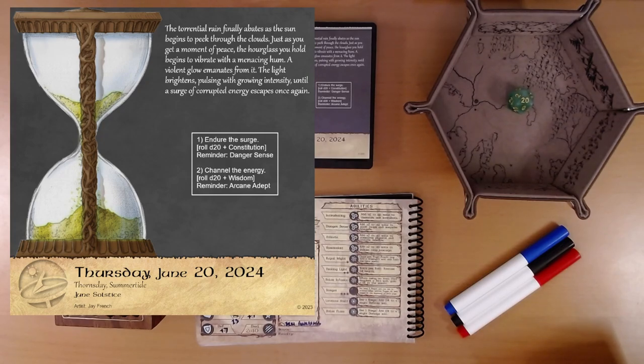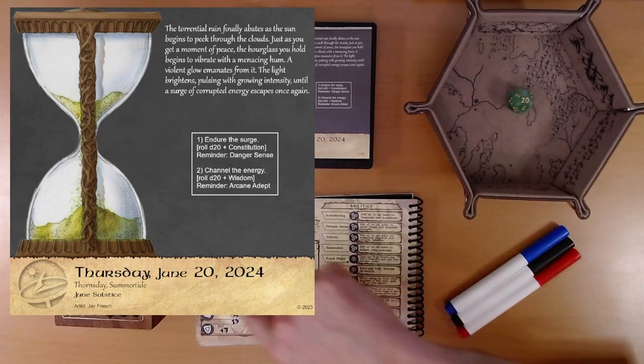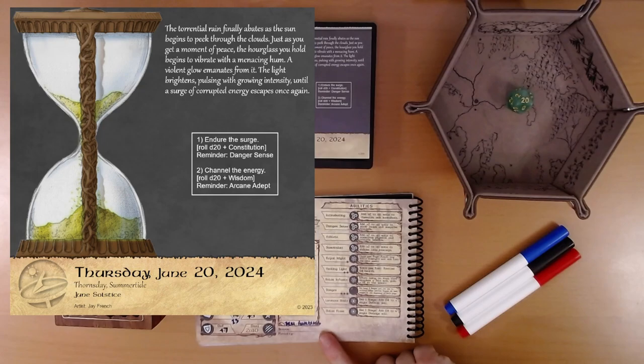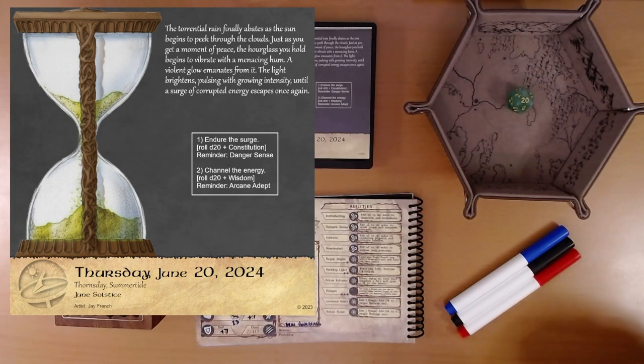D20 plus Wisdom. Our Wisdom is plus two. Reminder, Arcane Adept. We are not an Arcane Adept, nor do we have an Arcane Adept in our party. As the surge of corrupted power courses through your body, you must concentrate on maintaining control and preventing the curse from overwhelming you. Use your inner strength to resist its adverse effects. And we have Brilliant Hourglass, so we get a plus. No. No bonus on this roll.